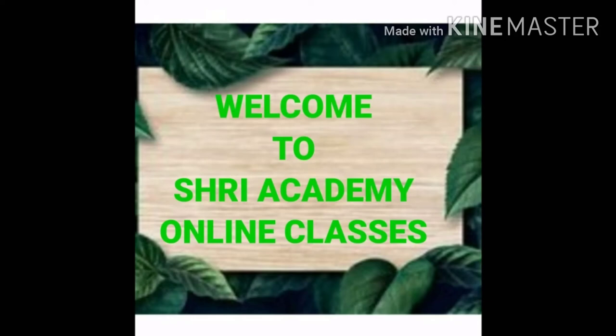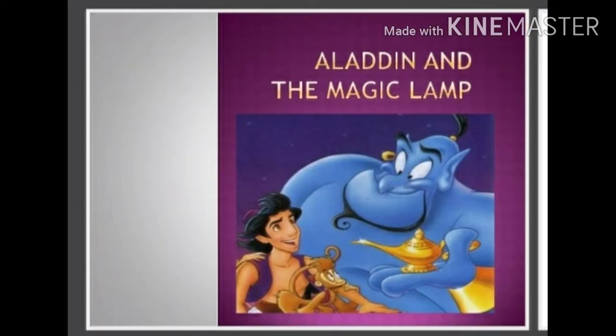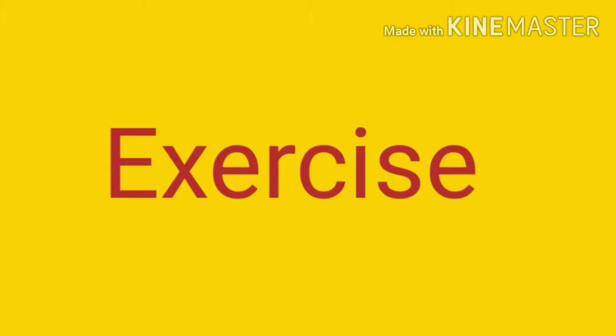Hello and welcome to Shrey Academy Online Teaching Classes. Today I am going to continue lesson 4, Aladdin and the Magic Lamp. I have already given you the word meaning of difficult words and the explanation of the lesson. Today I am going to continue the exercise of this lesson. So let's start the exercise.